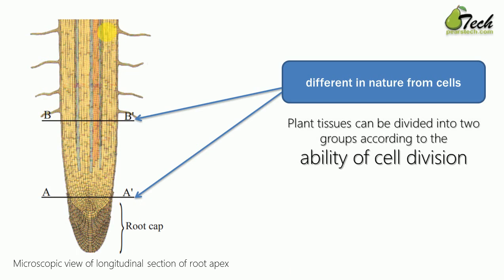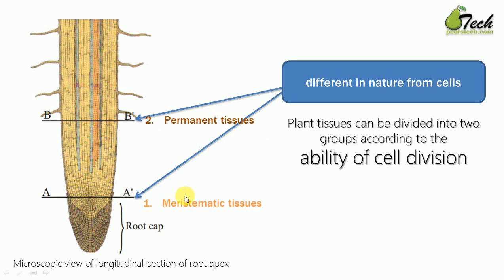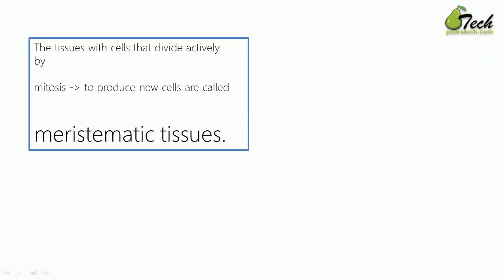Plant tissues can be divided into two groups according to the ability of cell division: number one is meristematic tissues, and number two is permanent tissues. Meristematic tissue is found in section AA, and permanent tissue is found in section PB.